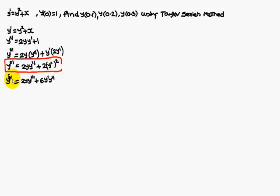Therefore, the fourth differentiation is 2y·y triple dash, plus — as usual, differentiating further — if you simplify, the next terms give you 6y dash·y double dash.